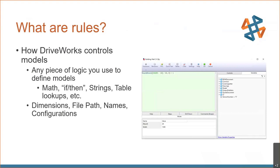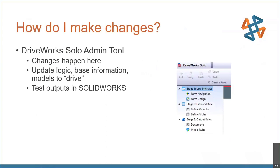We write rules for everything: dimensions, file paths, file names, configurations. Some rules are simple — take the user input and that's the answer. Some are complex, like computing a pattern quantity: round down ((width minus 18) divided by 50) then add 1. If you're familiar with Excel-based logic, you'll have a great time inside DriveWorks Solo.